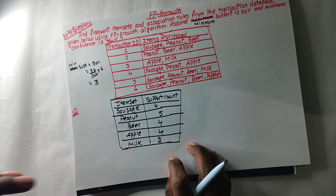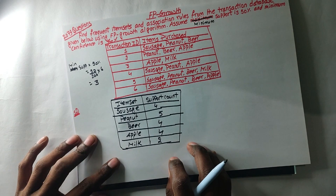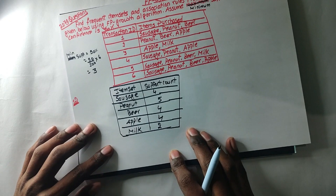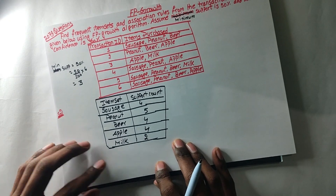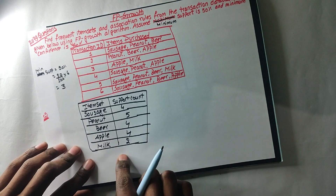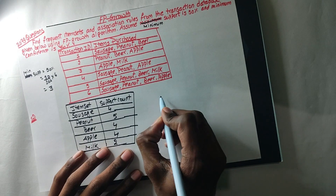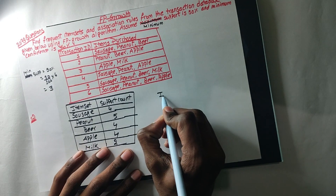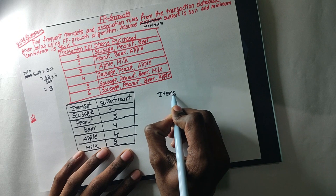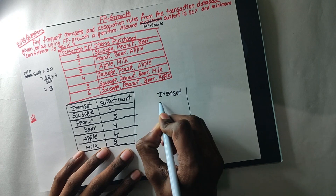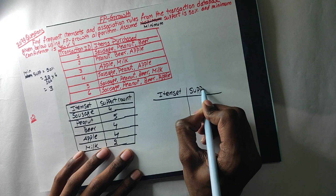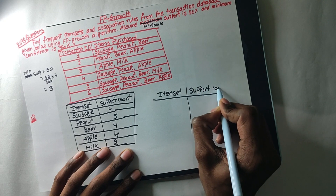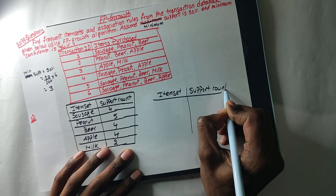We have to create a reject table — item set table — with support count. Support count and table, OK.